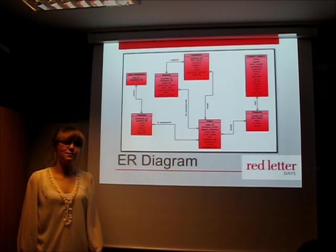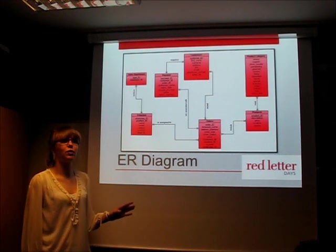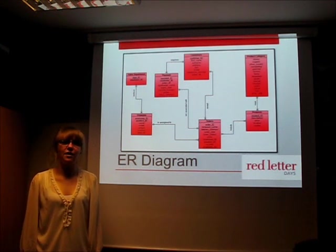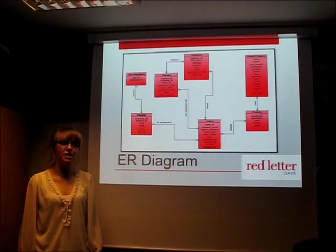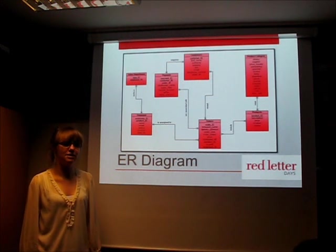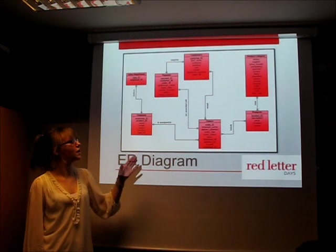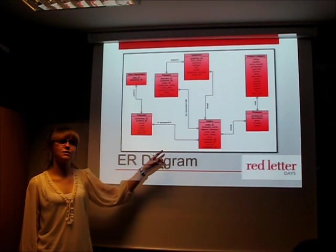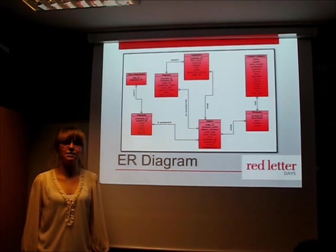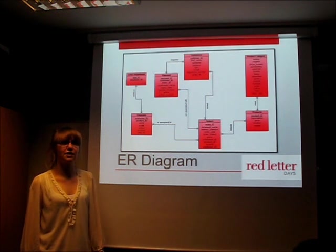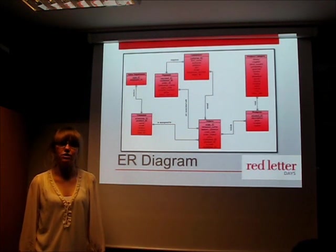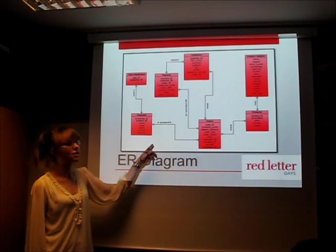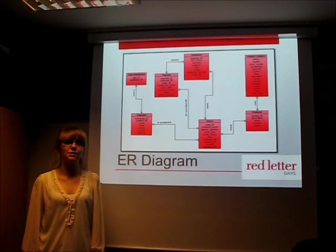One-to-many relationships exist between employees and orders, sales department and employee, customers and orders, and products and orders — occurring when an instance of one entity relates to many instances of another. Finally, many-to-many relationships occur when many instances of one entity relate to many of another; this is found only between product and product category. Regarding optionality, a circle represents a zero relationship — found between employees and orders, customers and orders, and products and orders — indicating these relationships are not mandatory. The remaining relationships are represented by a dash, indicating a mandatory relationship between the two entities.